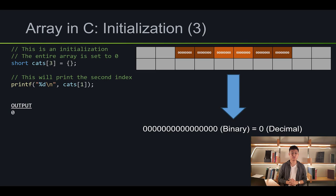This is also an initialization even if we didn't put any numbers in there. What this will do is the entire array will be zeros. So I also printed out the second index and it printed out zero.